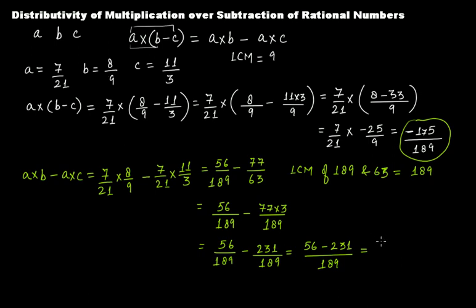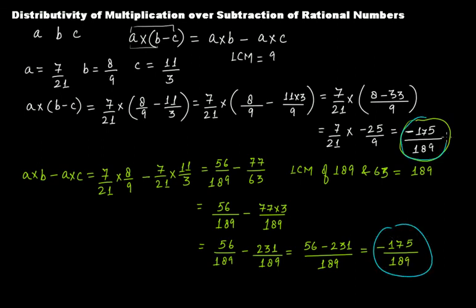Solving 56 minus 231 gives minus 175 over 189 — the same result as before. Hence it is proved that distributivity of multiplication over subtraction of rational numbers is satisfied.